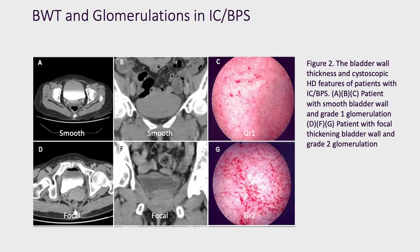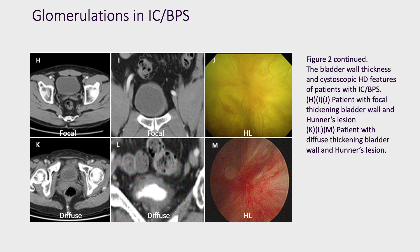Figure 2 showed bladder wall focal thickening and glomerulation under cystoscopy hydrodistension in patients with IC/BPS. Pictures A, B, and C demonstrated a patient with smooth bladder wall in transverse and coronal sections of the bladder CT scan and grade 1 glomerulation under hydrodistension. Pictures D, E, and F demonstrated a patient with focal thickening in transverse and coronal sections and grade 2 glomerulation. Pictures K, L, and M showed a patient with diffuse thickening and a Hunner's lesion under cystoscopy.